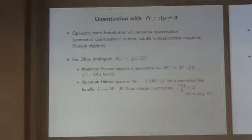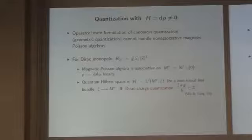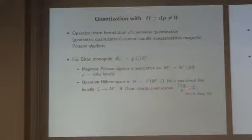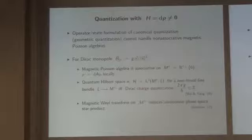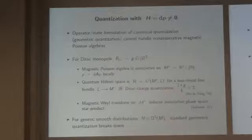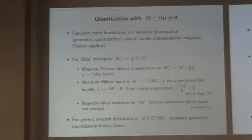We know that rho is exact locally, and we can take the quantum Hilbert space to be the space of sections of a line bundle over this punctured space. It's a non-trivial line bundle in general, and that exists if and only if the Dirac charge quantization condition is satisfied. This is a topological way of understanding Dirac charge quantization, going back over 40 years. But if we want to look at generic smooth distributions of the magnetic charge, these standard techniques simply break down.